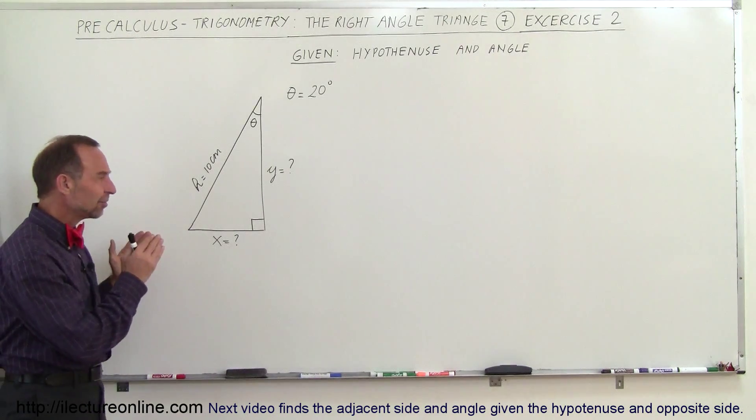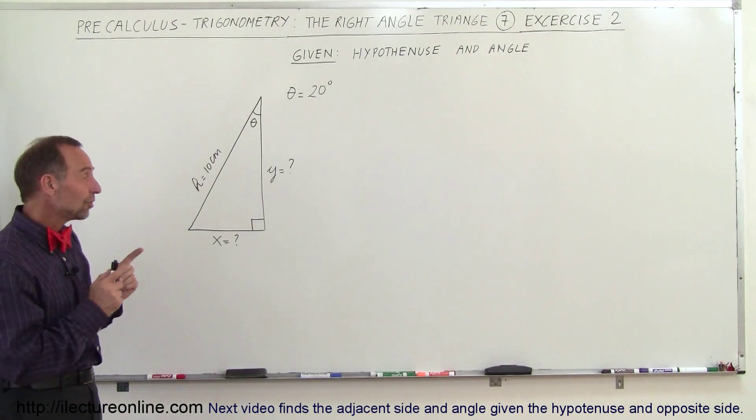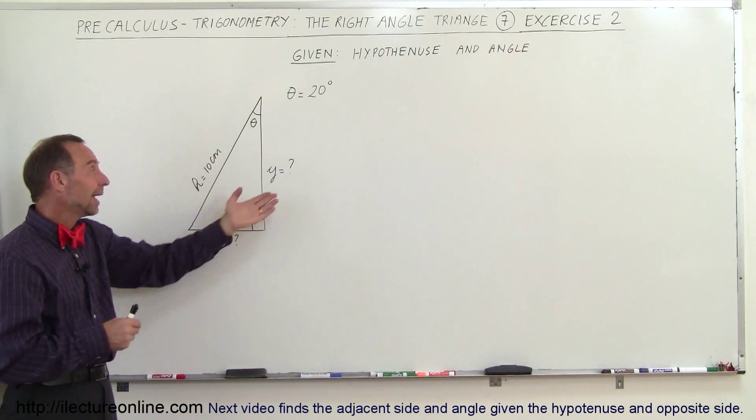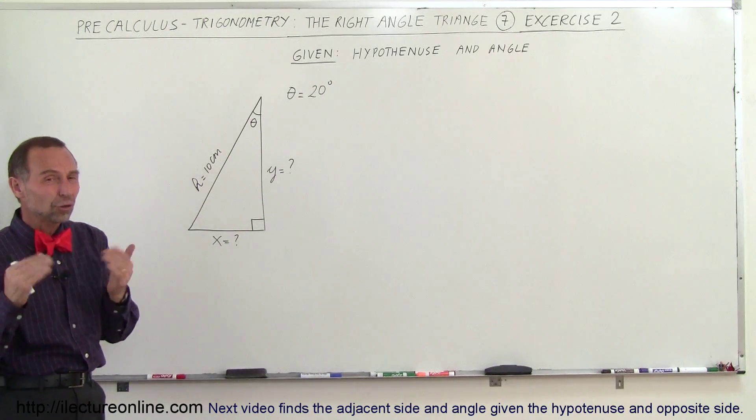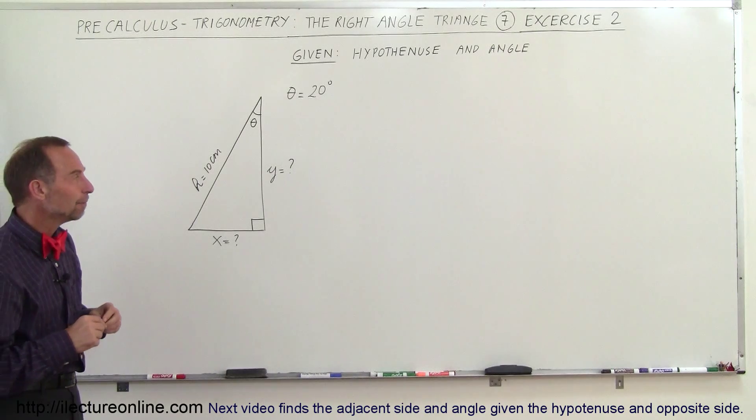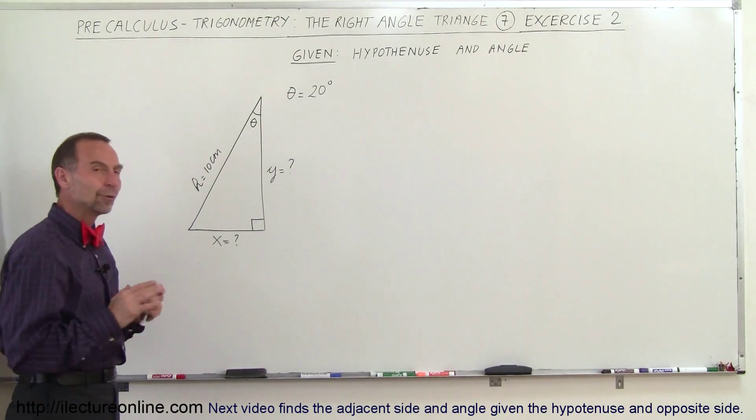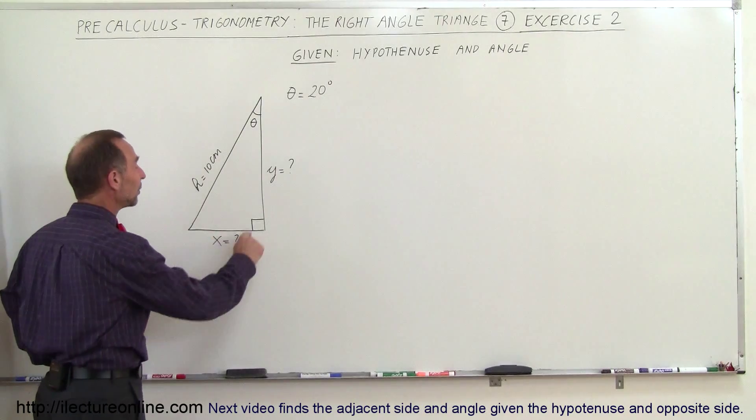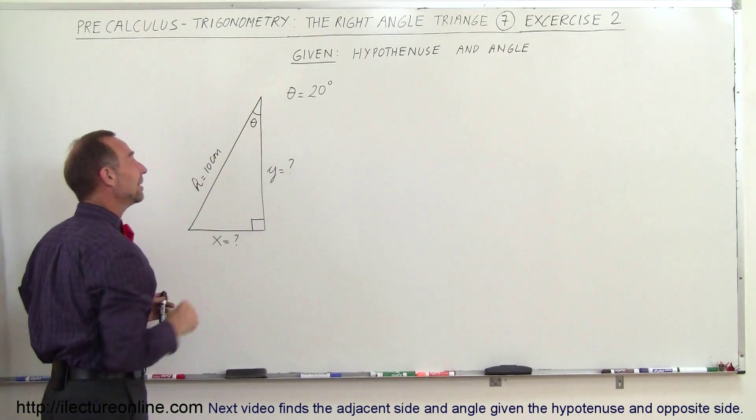But I set up the triangle like this intentionally to notice that x doesn't always associate itself with the cosine and y doesn't always associate itself with the sine of the angle. So to avoid making a mistake here what you should do is label these relative to the hypotenuse and the angle.